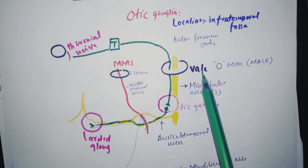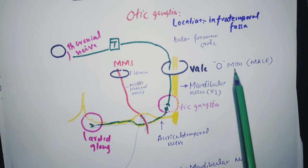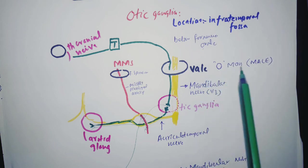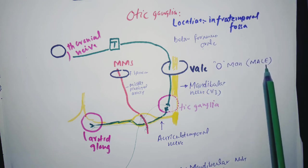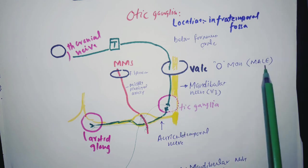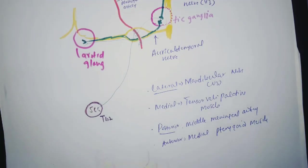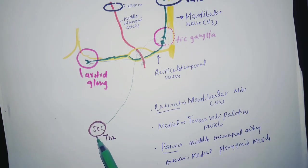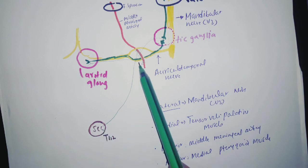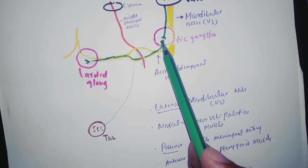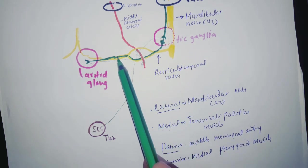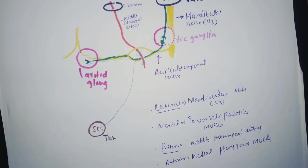The mnemonic for foramen ovale contents is 'O MEN MALE': O is for ovale, MEN is for mandibular, A is for accessory meningeal artery, LES is for lesser superficial petrosal nerve, and E is for emissary vein. For sympathetic supply, fibers come from the superior cervical ganglia at T1-T2. These nerve fibers wrap around the middle meningeal artery and enter the otic ganglia without synapsing there, passing directly through to supply the parotid gland.